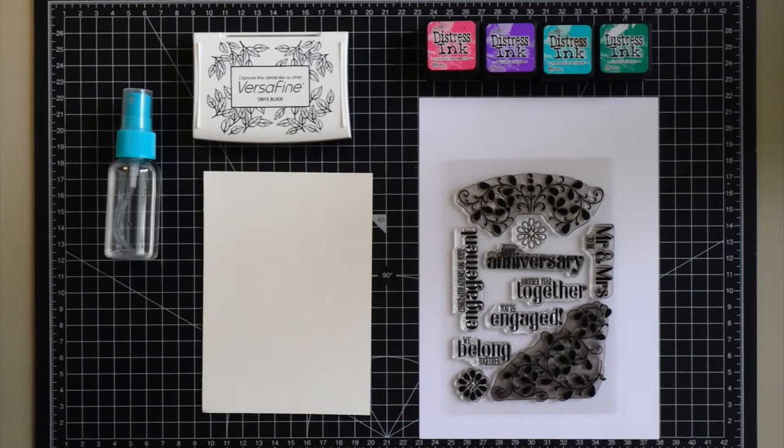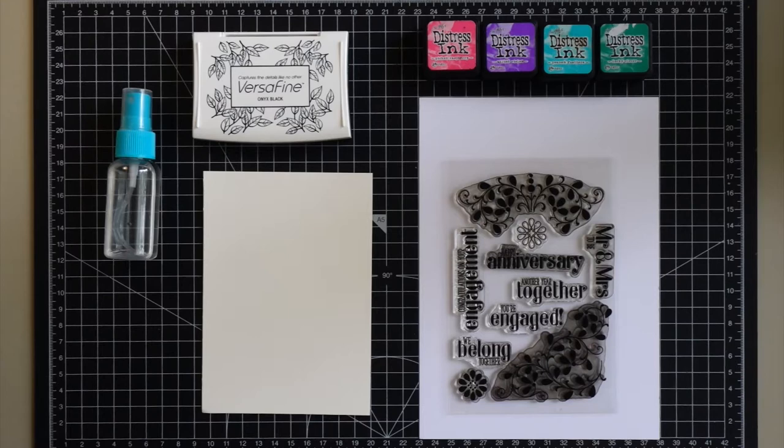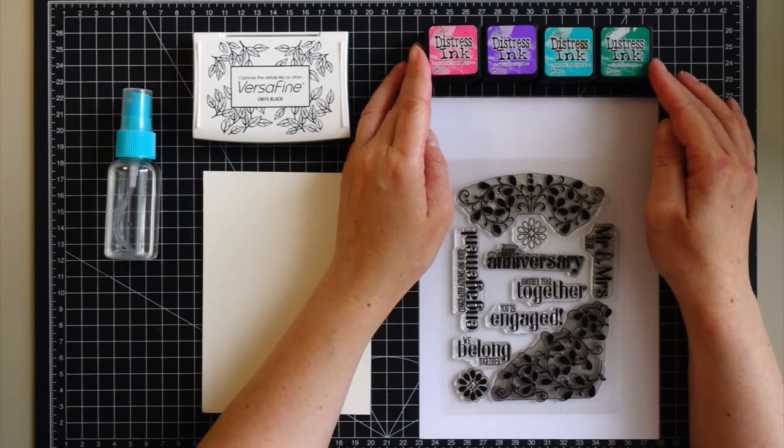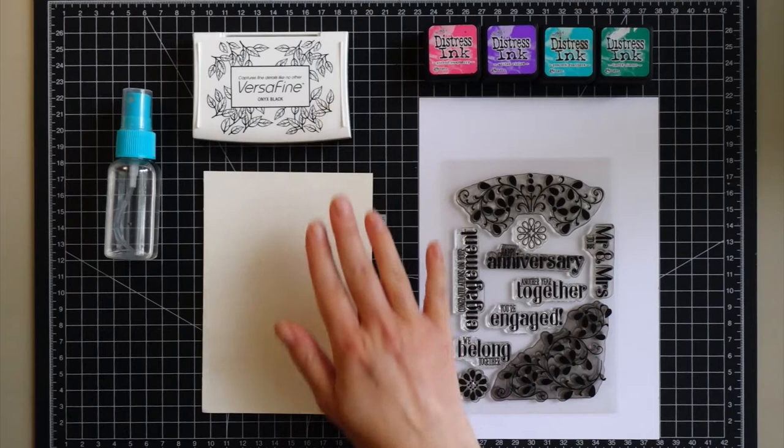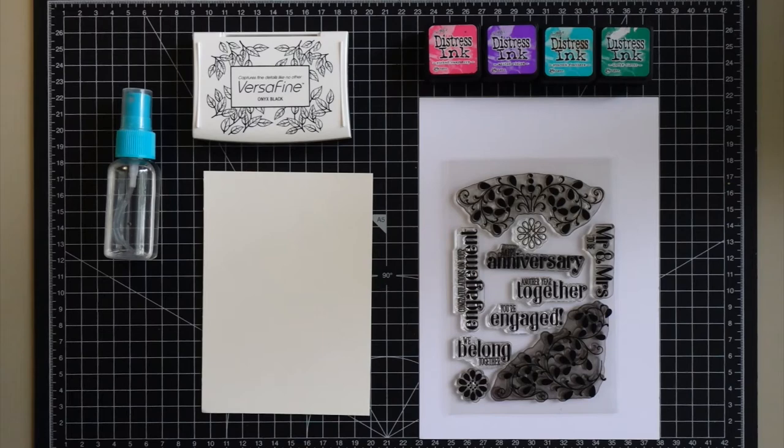Since this card includes distress ink stamping I picked up four distress ink colors. I also have here the VersaFine ink in Onyx Black which is a waterproof ink, very important for this project. For the cardstock I'm using the Canson XL 300 GSM watercolor cardstock and I also will be using a spray bottle with clear water.